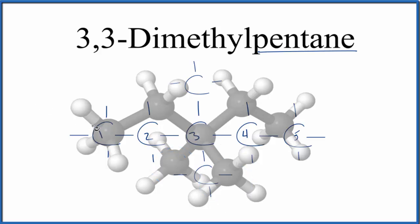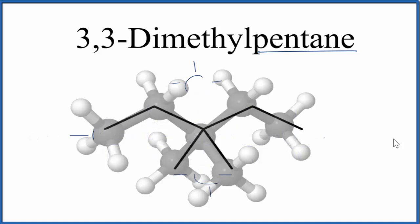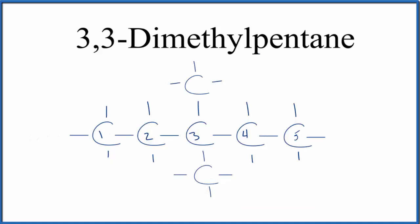Sometimes you'll see this drawn with just lines like this, where the hydrogen atoms aren't shown. Either way, this is the structure for 3,3-dimethylpentane, also called isobutanol.